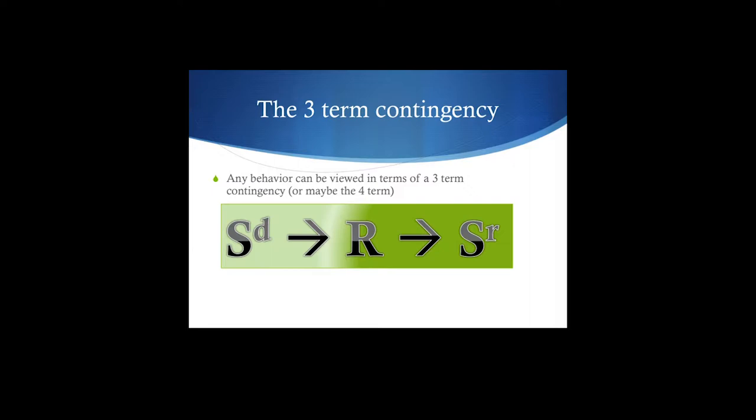And up there, you notice that it may be a four-term. That fourth term is the motivating operations that we talked about. The MOs, the establishing operations or the abolishing operations, those can affect the value of the reinforcement. Some people write those in here, in front of this thing. So some people put those MOs in somewhere. It's not a requirement. The basic three-term contingency is there. It can be modified. There are things that modify the reinforcers and things that modify the discriminative stimuli.